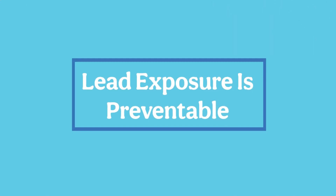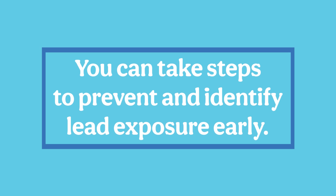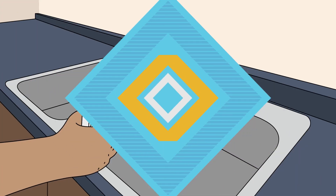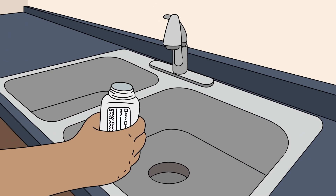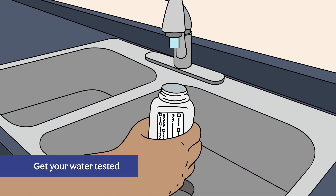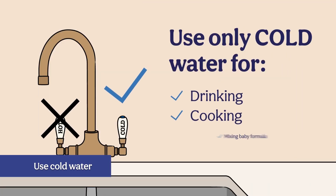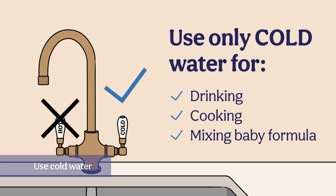The good news is that lead exposure is preventable. You can take steps to prevent lead exposure and identify it early to protect your health and your relatives' health. For example, get your water tested for lead by a certified water tester. Use cold water for drinking, cooking, and mixing baby formula, since hot water can have more lead in it.